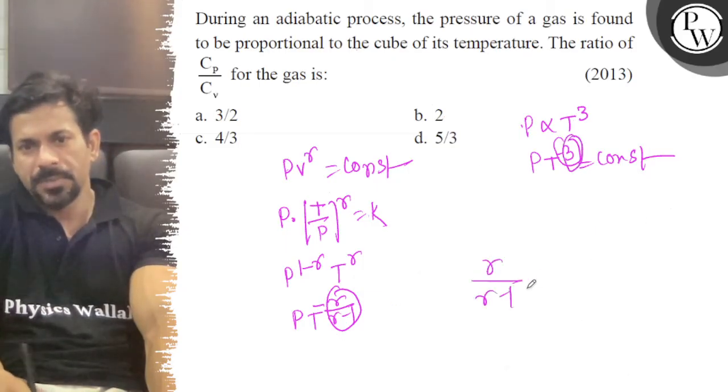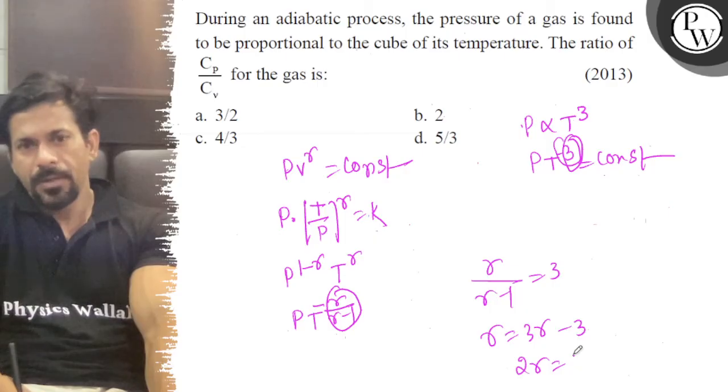So, gamma upon gamma minus 1 is equal to 3. So, gamma is equal to 3 gamma minus 3. So, 2 gamma is equal to 3. So, gamma is equal to 3 by 2.